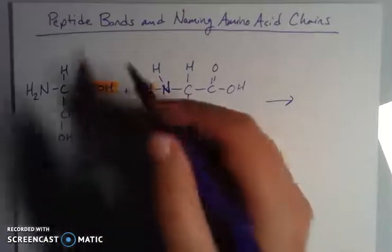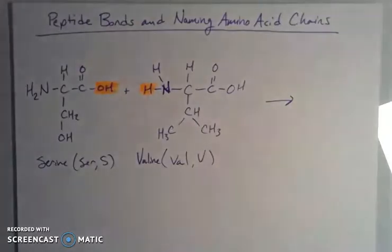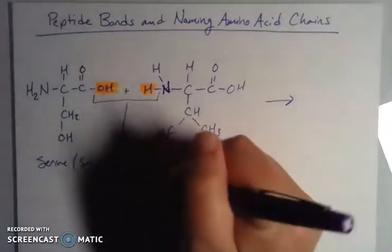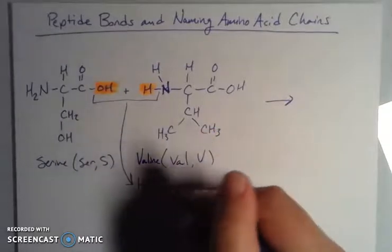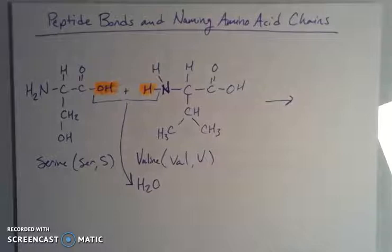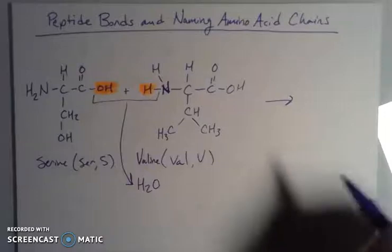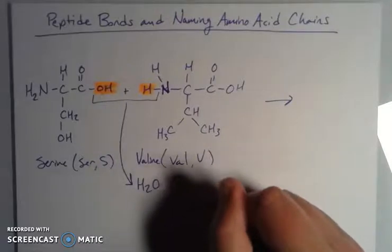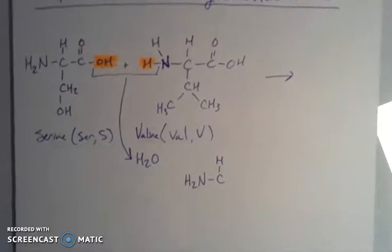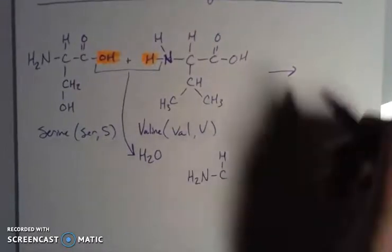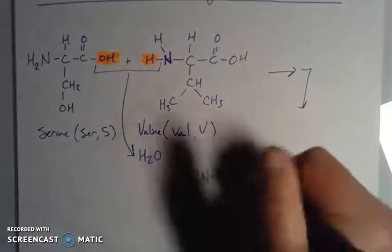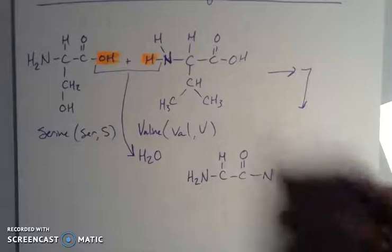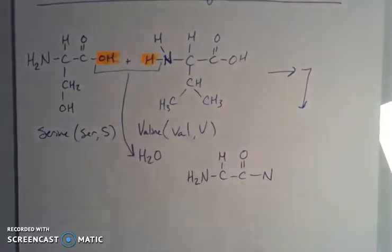When I put these two amino acids together, the hydroxide on the carboxylic acid of one and the hydrogen on the amine of the other combine and are removed as water. So this is a dehydration reaction — we're removing water from these amino acids. What's left over is the combination of the two amino acids joined together. Here's the carbonyl, and now it's attached to the amine group of the second amino acid, because we got rid of the hydroxide and the hydrogen that formed water.